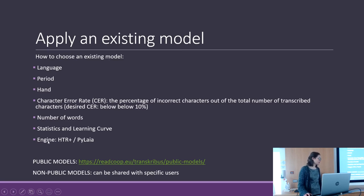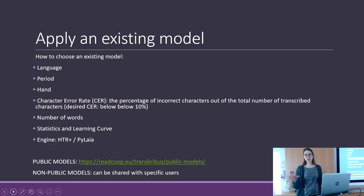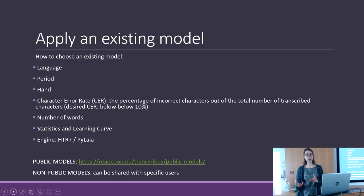The character error rate is an element defined by Transcribus to understand the accuracy of a model. The character error rate is the percentage of incorrect characters out of the total number of transcribed characters. It takes 100 characters, sees how the machine performs, and compares it with the human transcription to obtain this character error rate.